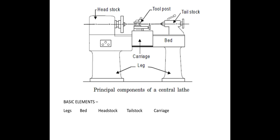This is the block diagram of an actual lathe machine. The main parts of the lathe machine are: legs, bed, headstock, tailstock, and carriage. These are the main parts of the lathe machine. Now we will discuss them one by one.